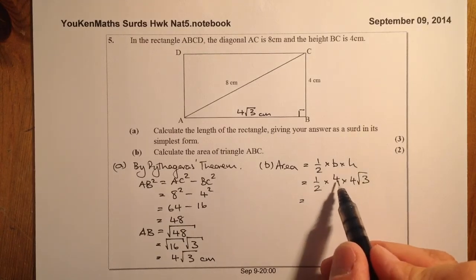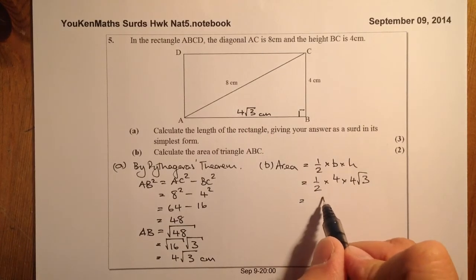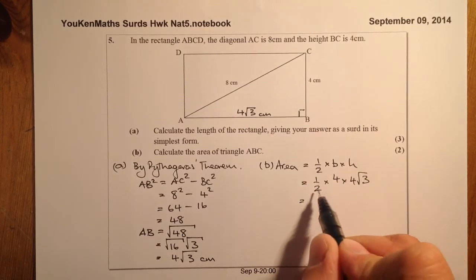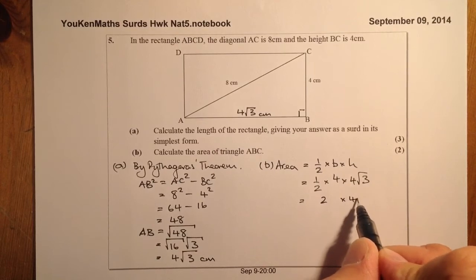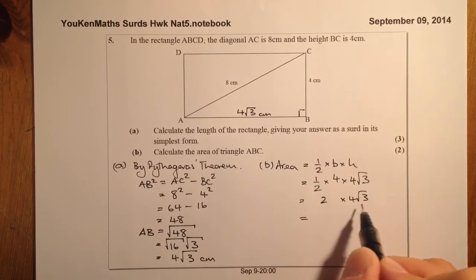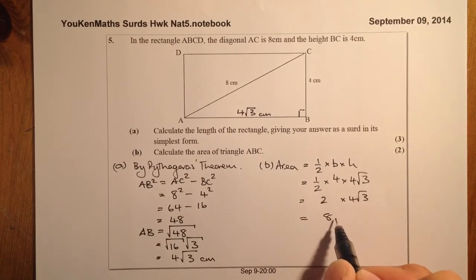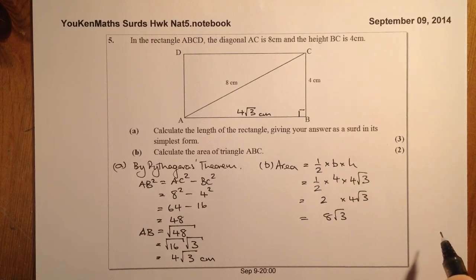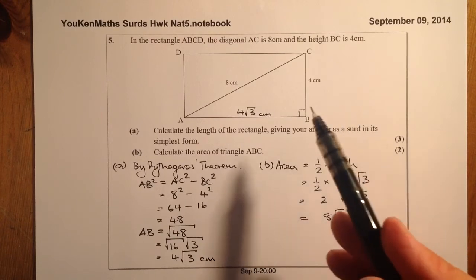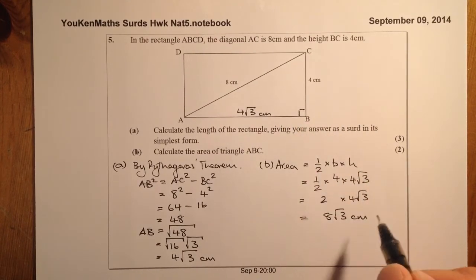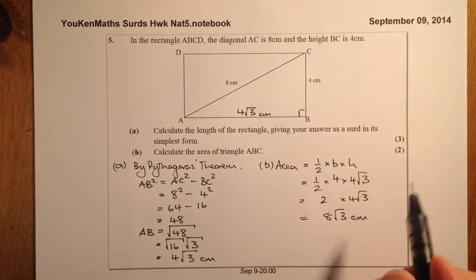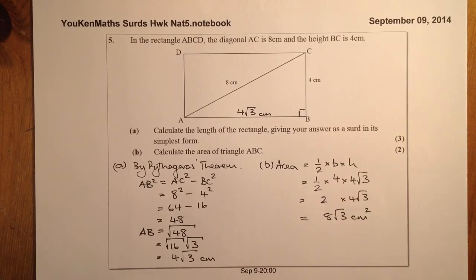So a half of 4 is 2, and we multiply that by 4 root 3. Finally from there, I've got 8 root 3 coming out as the answer. We're working in centimetres and we're finding area, so that would be centimetres squared. And that would be that question complete — 5 marks gained there.